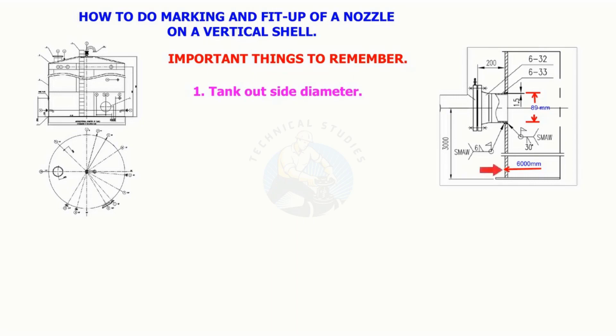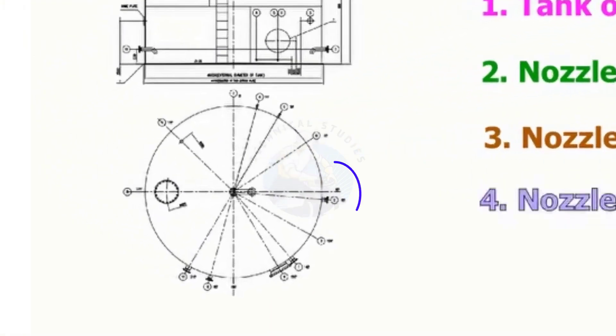Important things to remember: tank outside diameter, nozzle OD, nozzle elevation, nozzle orientation, in this case 95 degrees.